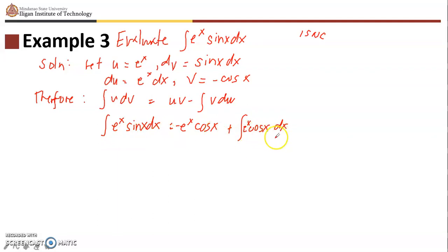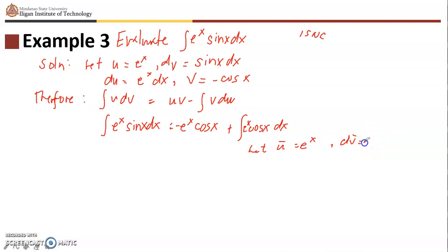This means we can apply integration by parts again. We let u-bar equal to e to the x and dv-bar equal to cosine x dx. Therefore du-bar is still e to the x dx, and v-bar — integrating cosine — gives us positive sine x, since the integral of cosine is sine.